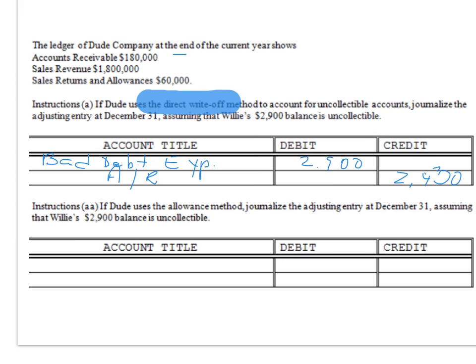Now let's switch to a second scenario using the allowance method. How would this journal entry be different? You still need to take the receivable off your books, so accounts receivable is still credited for the same $2,900. But in this case, you debit Allowance for Doubtful Accounts for $2,900.